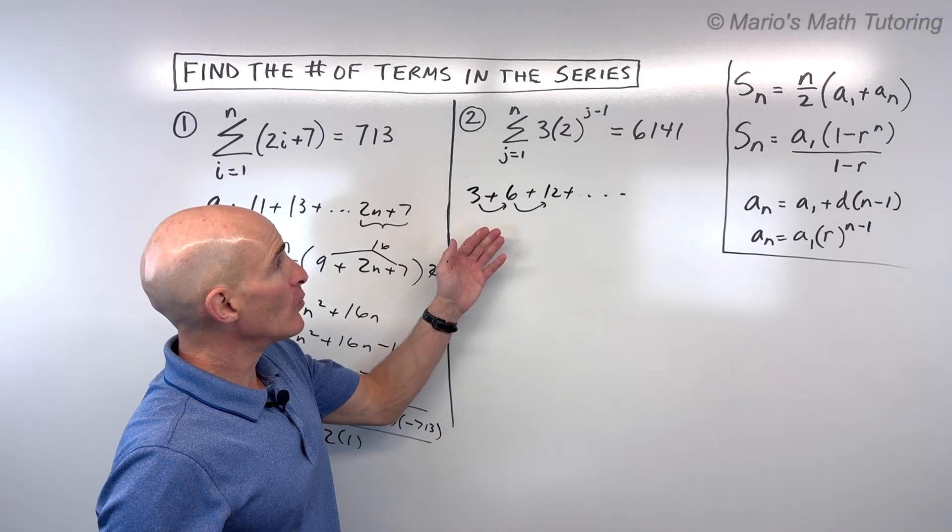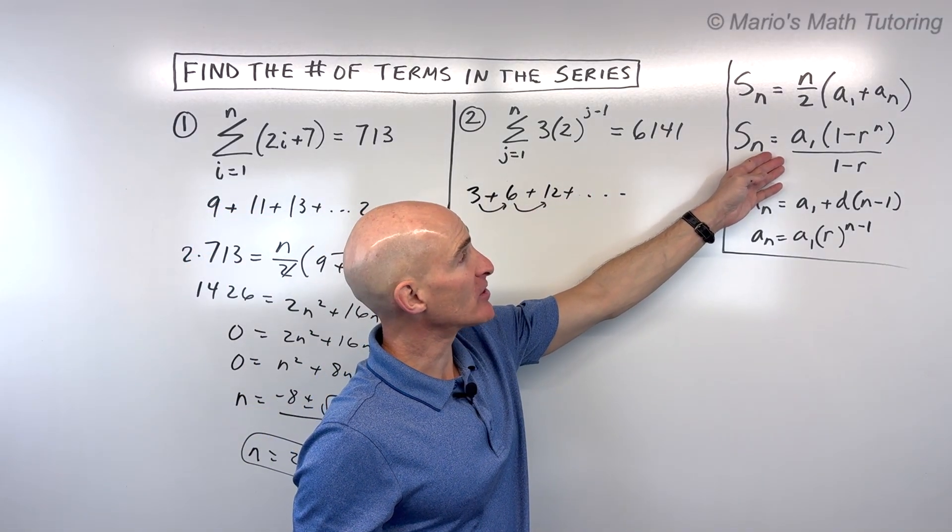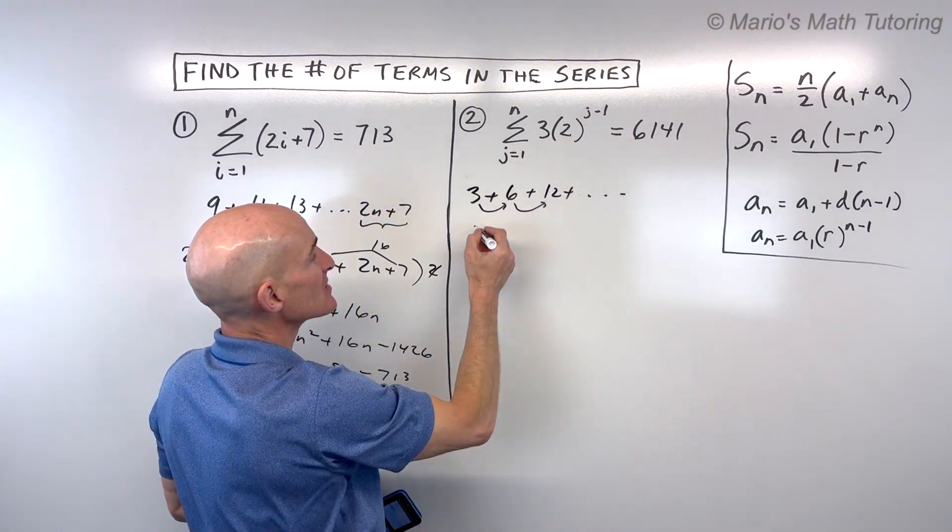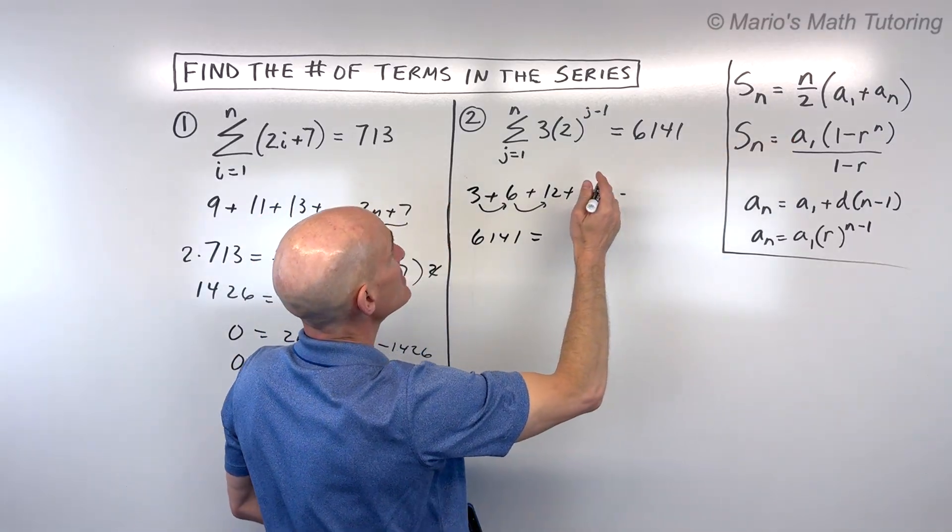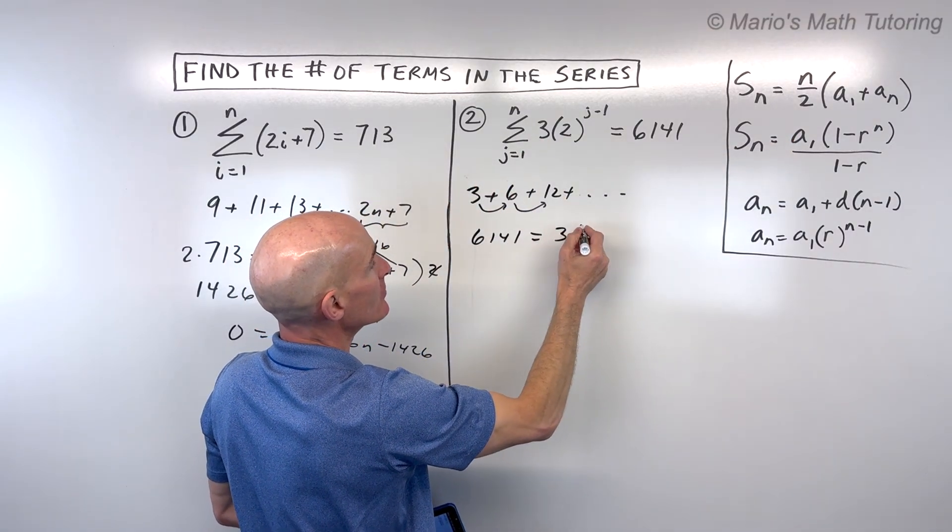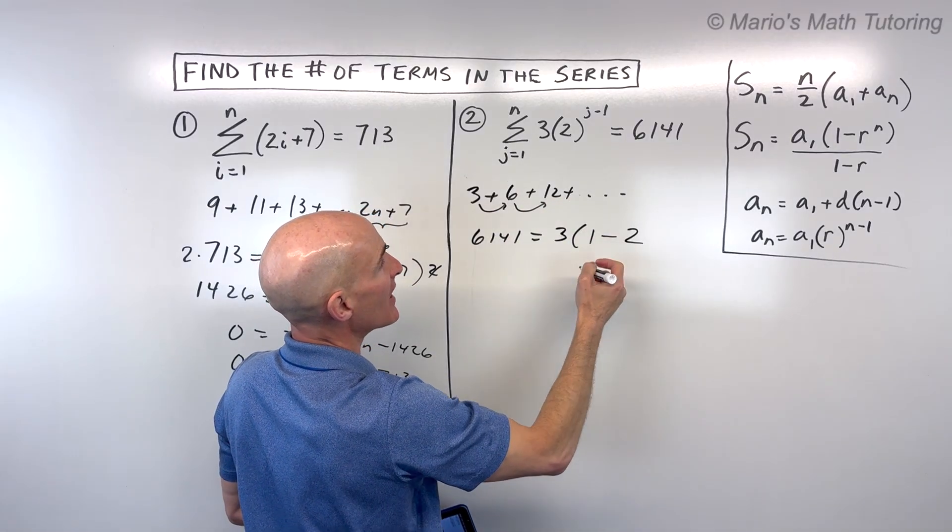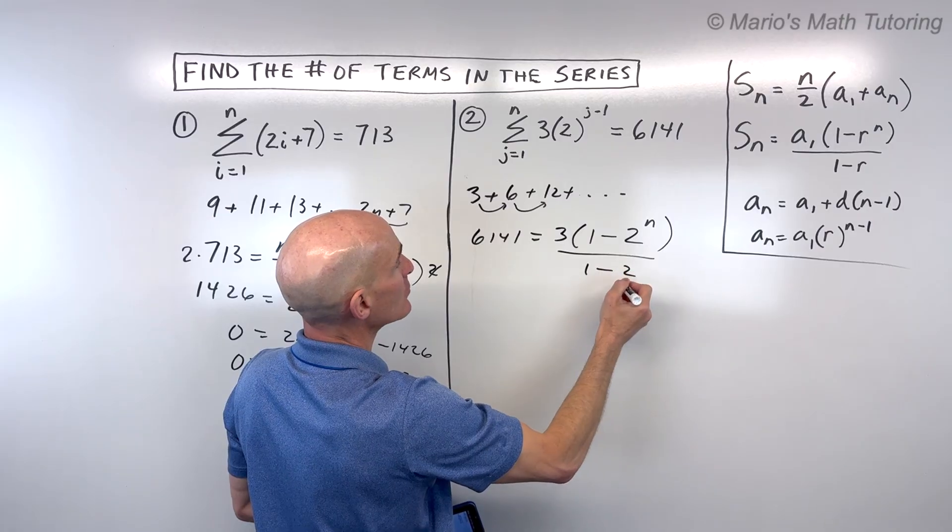So now we're dealing with a series. We're going to use this finite geometric sum formula for geometric series. And we've got the sum, which is 6,141. That equals a sub 1, which is 3, our first term. 1 minus our ratio, which we said was 2. We're multiplying by 2 each time. n is the number of terms that we're going to solve for over 1 minus the ratio, which is 2.